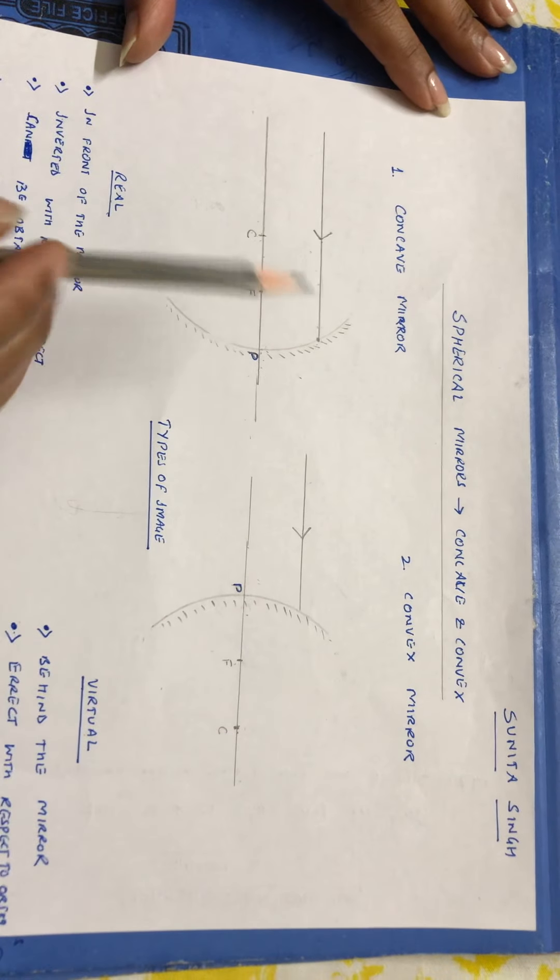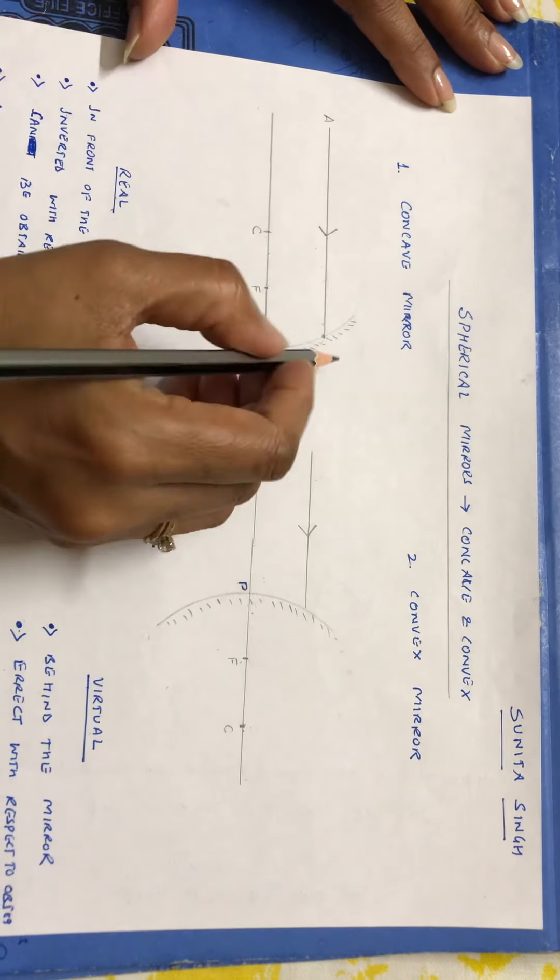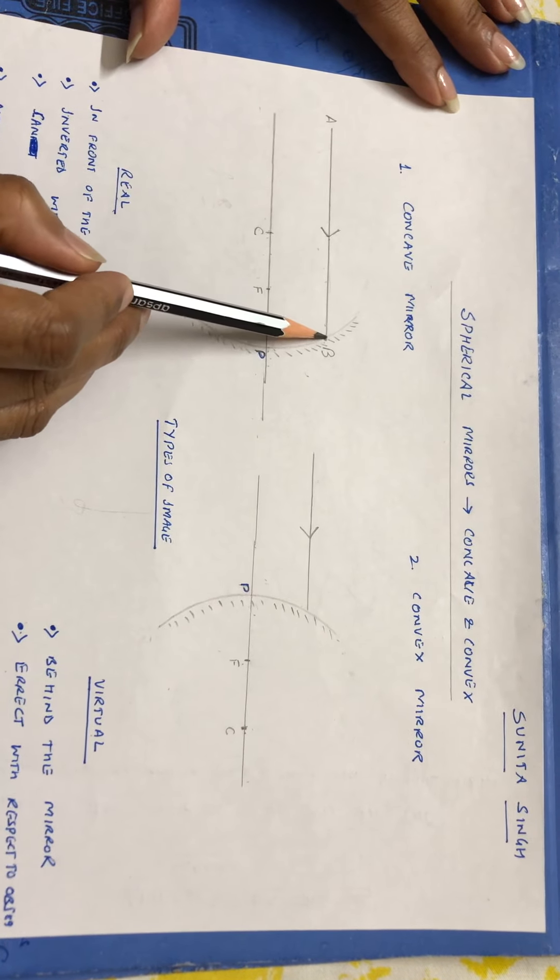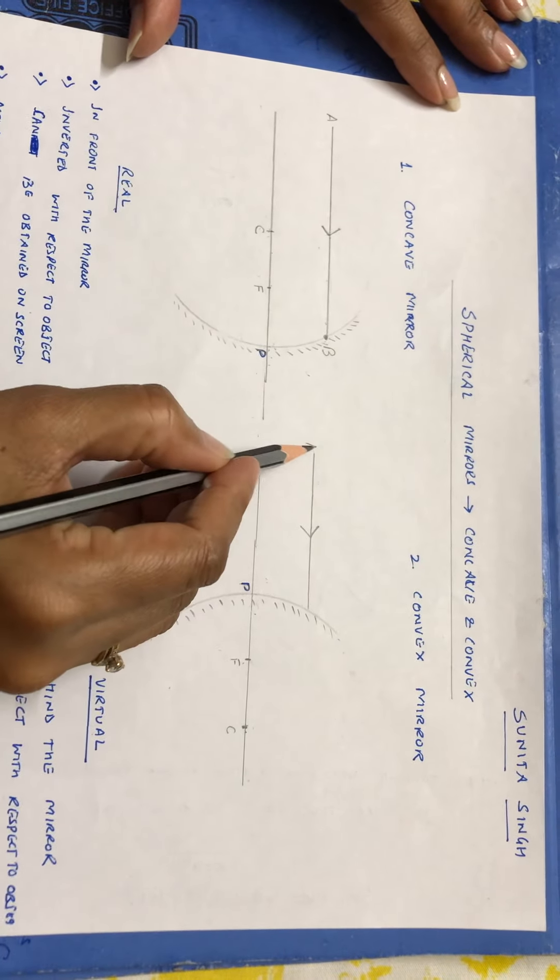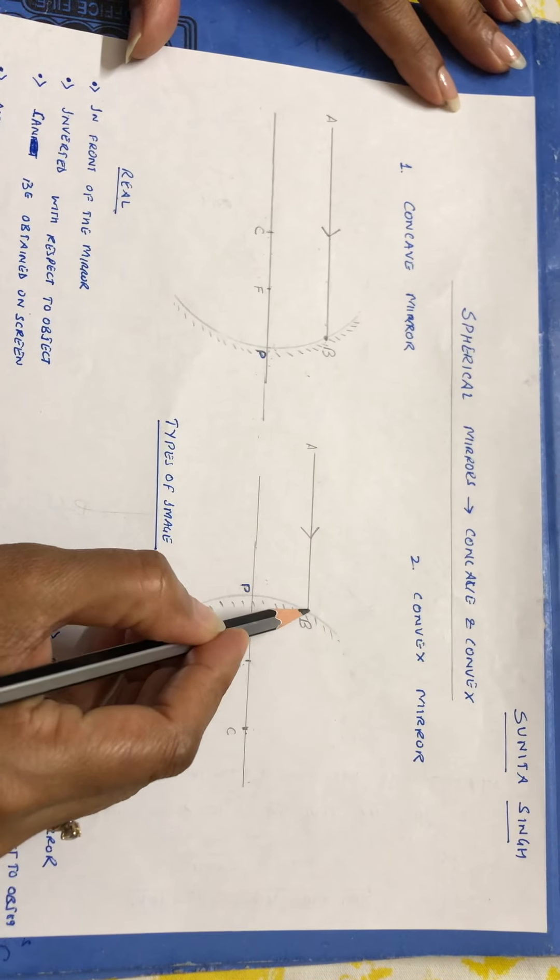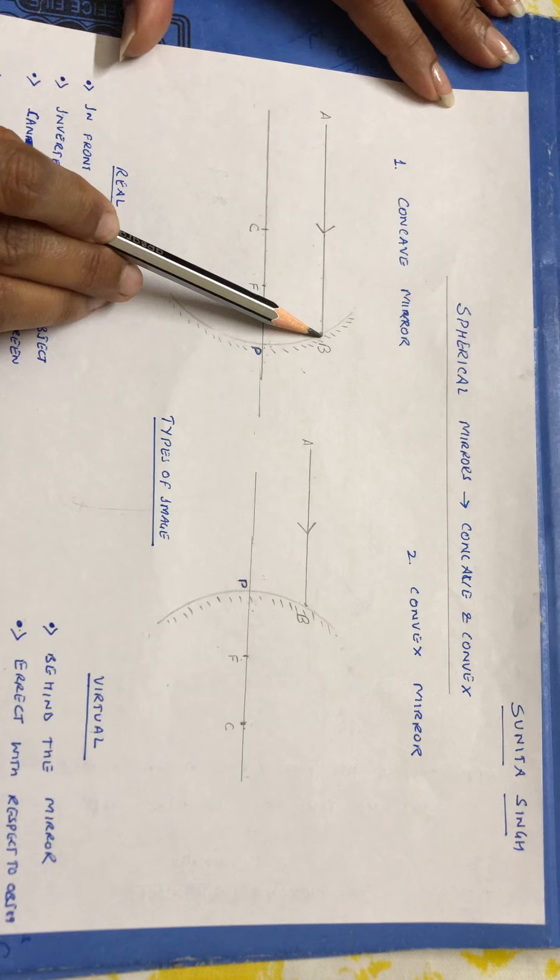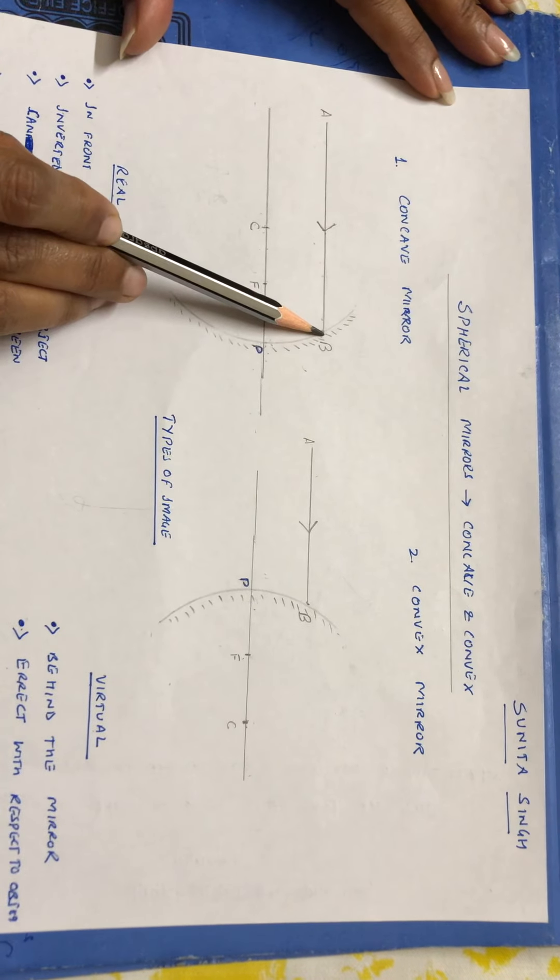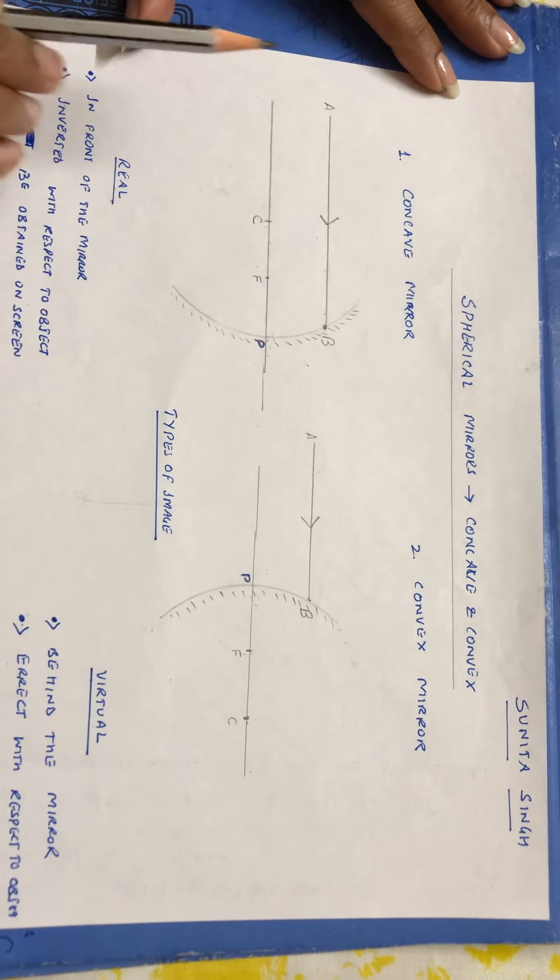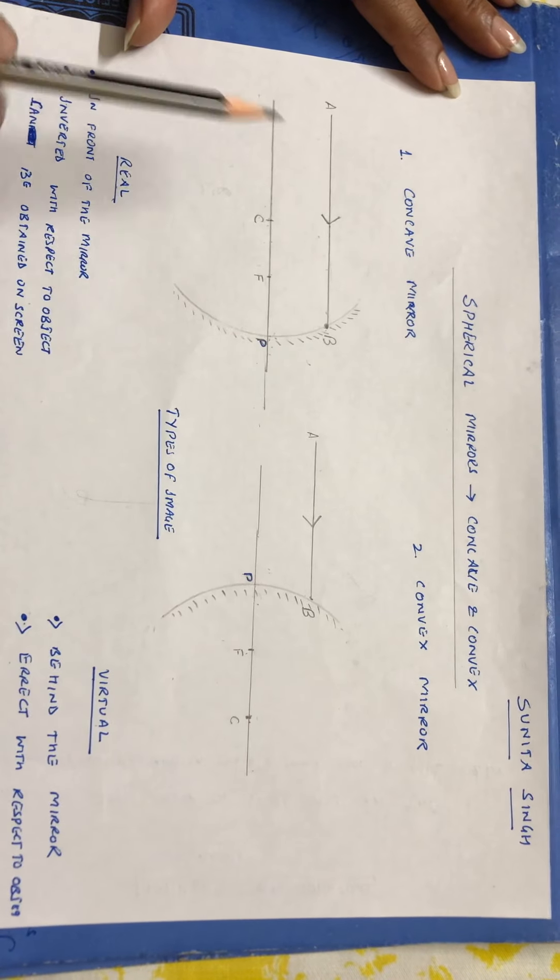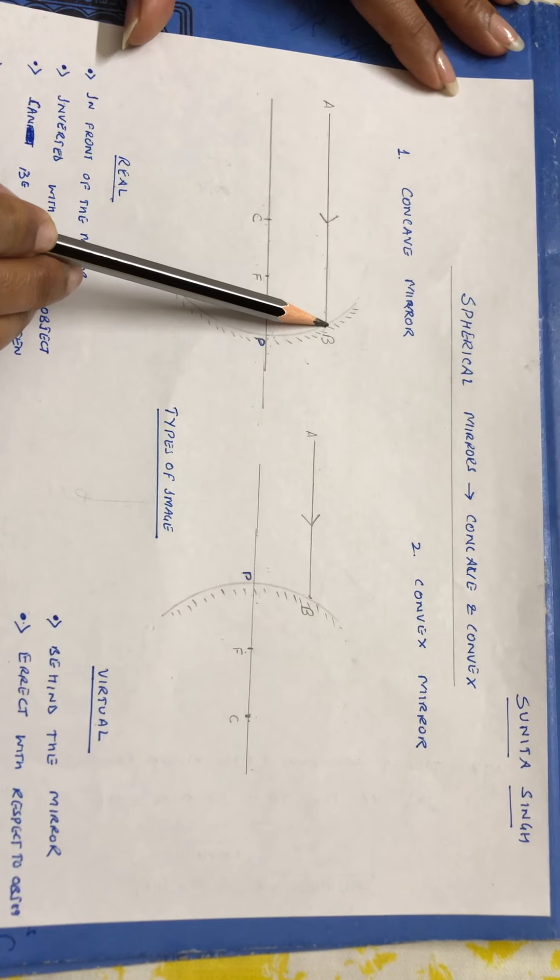This is the incident ray. If I label this as A, B. So B is our point of incidence. Same for this, A, B. The first rule that we have to remember is that at the point of incidence, we have to drop a normal. What is a normal? The normal is a perpendicular dropped at the point of incidence.